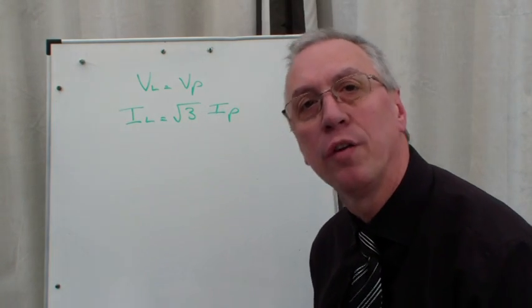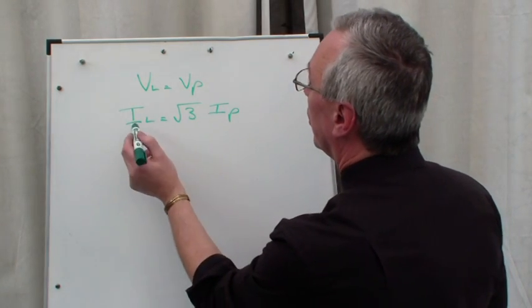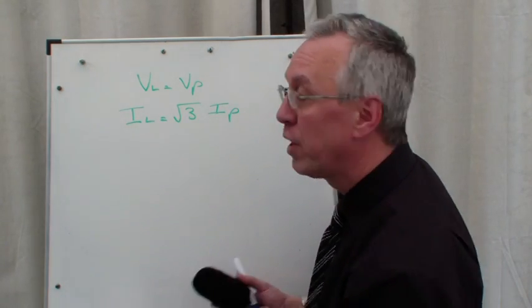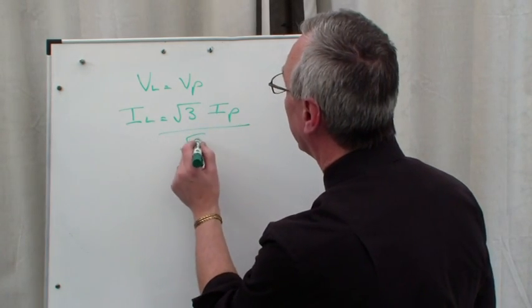If you want to find IP on its own, just cross it down or divide both sides by √3 so that the √3 will cancel out.